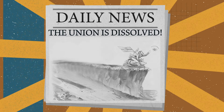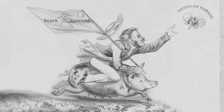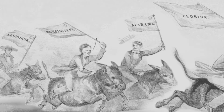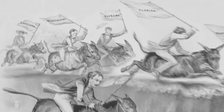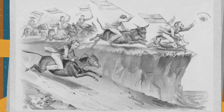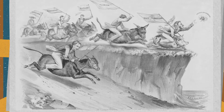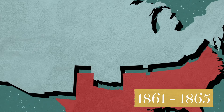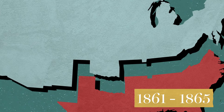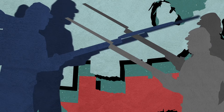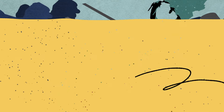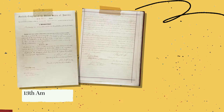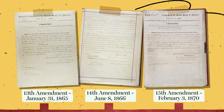Six weeks later, South Carolina voted to secede from the Union, setting off a chain reaction among other southern states who were worried that ending slavery would destroy the southern economy and jeopardize states' rights. In the aftermath of the 1860 presidential election, the country was split in two. It would take a long and bloody civil war and the ratification of three constitutional amendments to unite it once again.